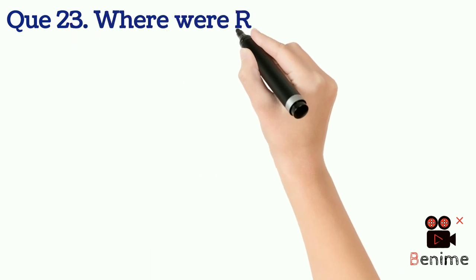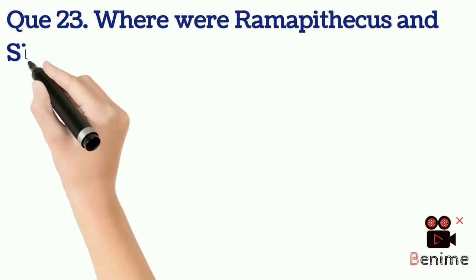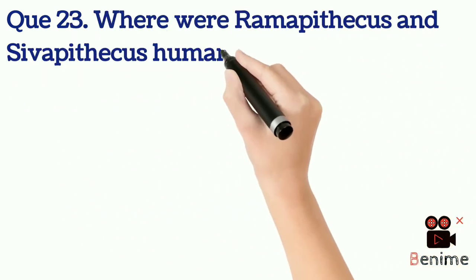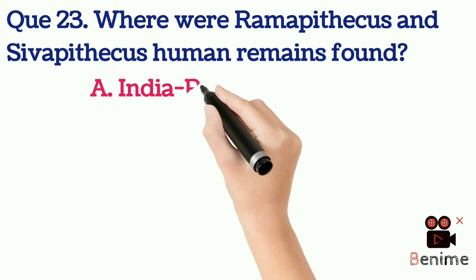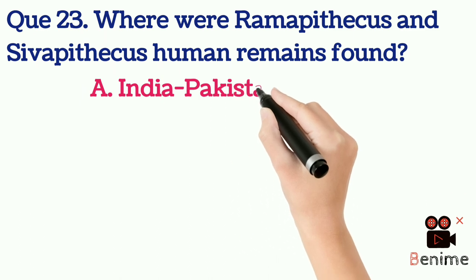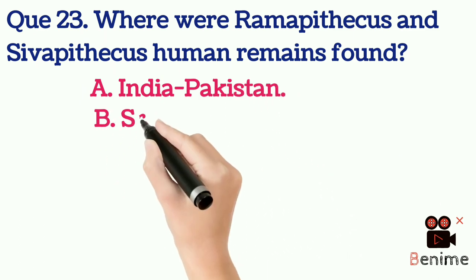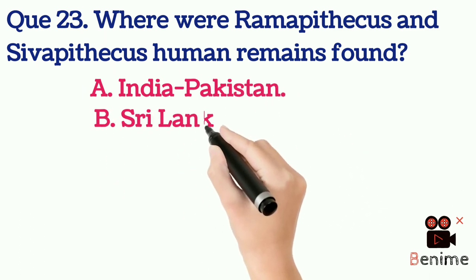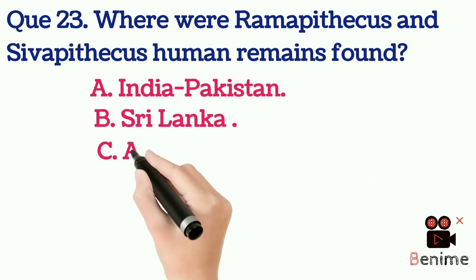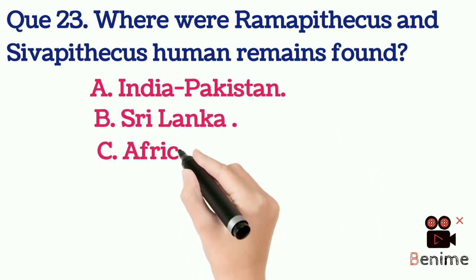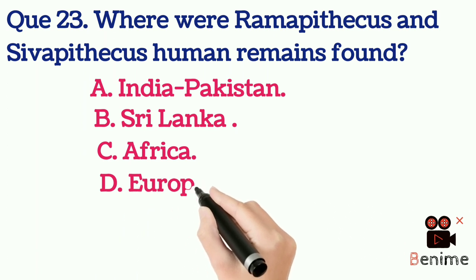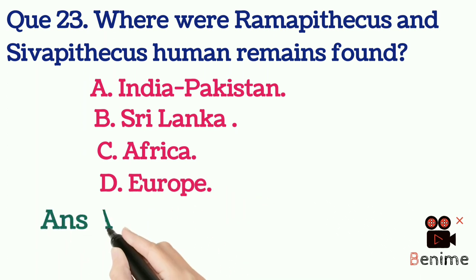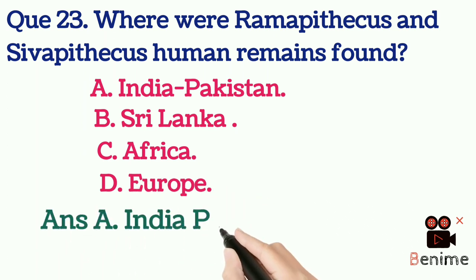Question 23: Where were Ramapithecus and Sivapithecus human remains found? A. India, Pakistan. B. Sri Lanka. C. Africa. D. Europe. Answer A: India, Pakistan.